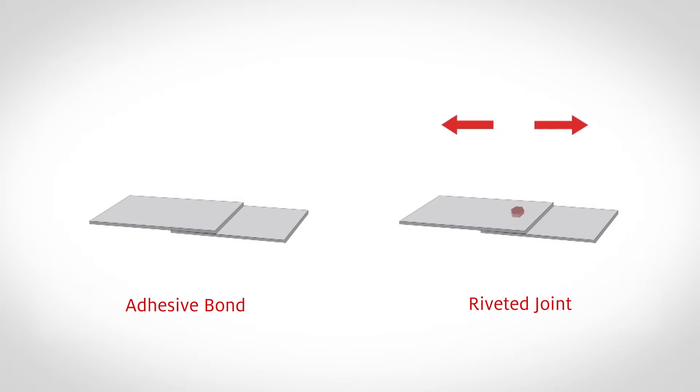Here we illustrate one of the many advantages to using adhesives over mechanical fasteners. Rather than directing the load at a point, the adhesive distributes it over a larger area, making the adhesive bond more resistant to stresses than a riveted joint.